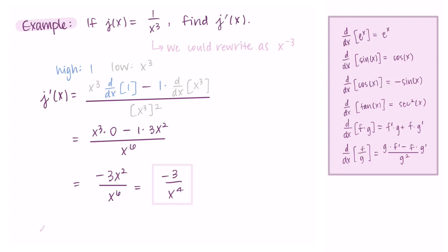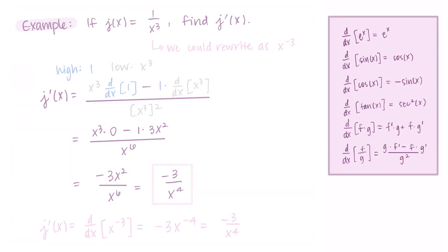We found this using quotient rule, and it's the same as what we'd get using power rule on x to the negative third: bring down the −3, decrease the exponent to −4, and we get −3 over x to the fourth — exactly the same result. You can compute the derivative whichever way you'd like, as long as you follow the rules properly, you'll end up at the same place. Thanks so much for watching, and I'll talk to you in the next one.